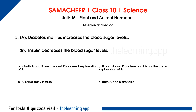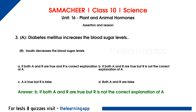Third question. Assertion: Insulin deficiency in diabetes mellitus increases blood sugar levels. Reason: Insulin decreases the blood sugar levels. Correct answer: Both A and R are true, but R is not the correct explanation of A.